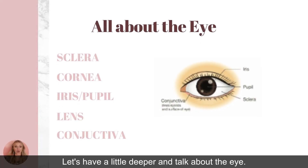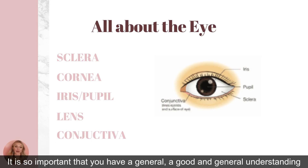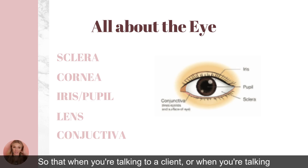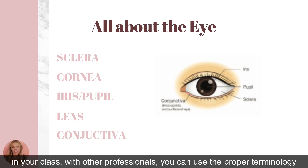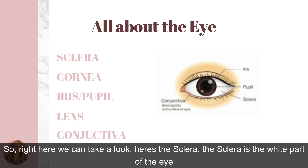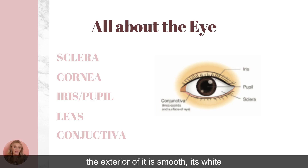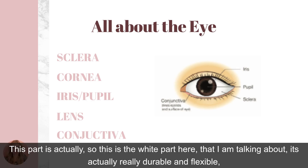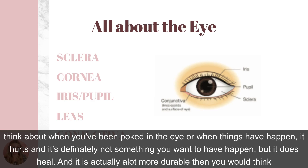Let's dive a little deeper and talk about the eye. It's so important that you have a good general understanding of the eye and its important aspects so that when you're talking to a client or other professionals you can use proper terminology. The sclera is the white part of the eye — the exterior is smooth and white, while the interior is actually brown and grooved. It's actually really durable and flexible; think about when you've been poked in the eye — it hurts, but it does heal and is more durable than you'd think.